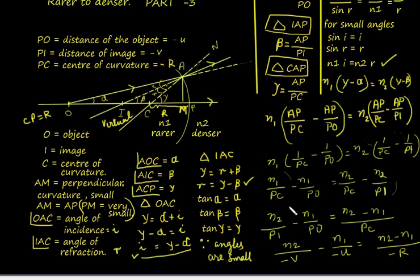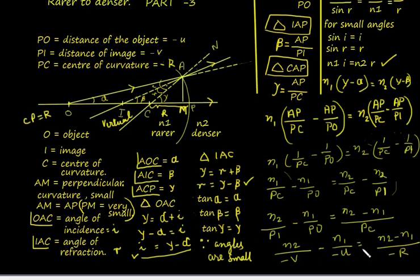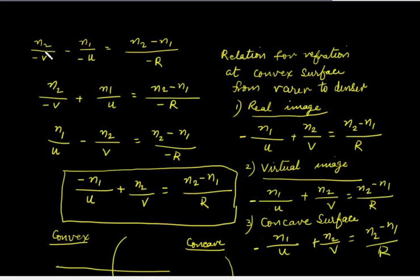N1/PC and N2/PC have the same denominator. Rearranging, we bring N2/PI to one side, so N2/PI minus N1/PO equals N2 minus N1 divided by PC. Substituting PI equals negative V, PO equals negative U, and PC equals negative R, this becomes N2/(negative V) minus N1/(negative U) equals N2 minus N1 divided by negative R.